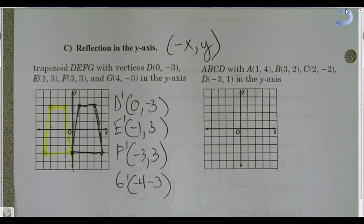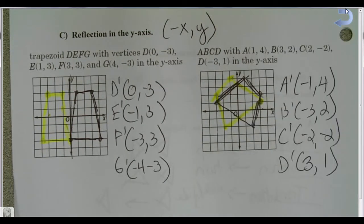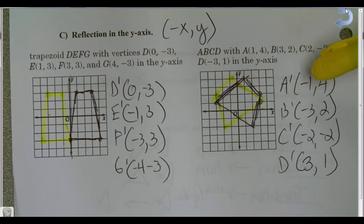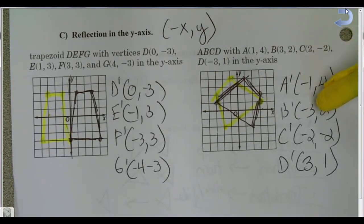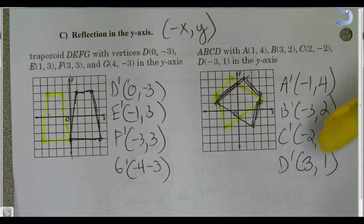Go ahead and do A, B, C, D and check your answer when done. The key points are: A′ at (−1, 4), B′ at (−3, 2), C′ at (−2, −2), and D′ at (3, 1).